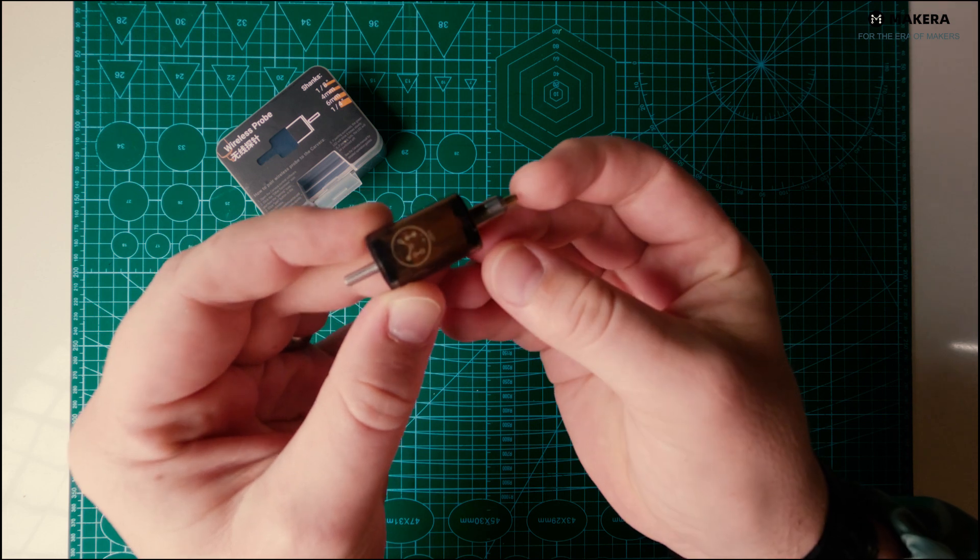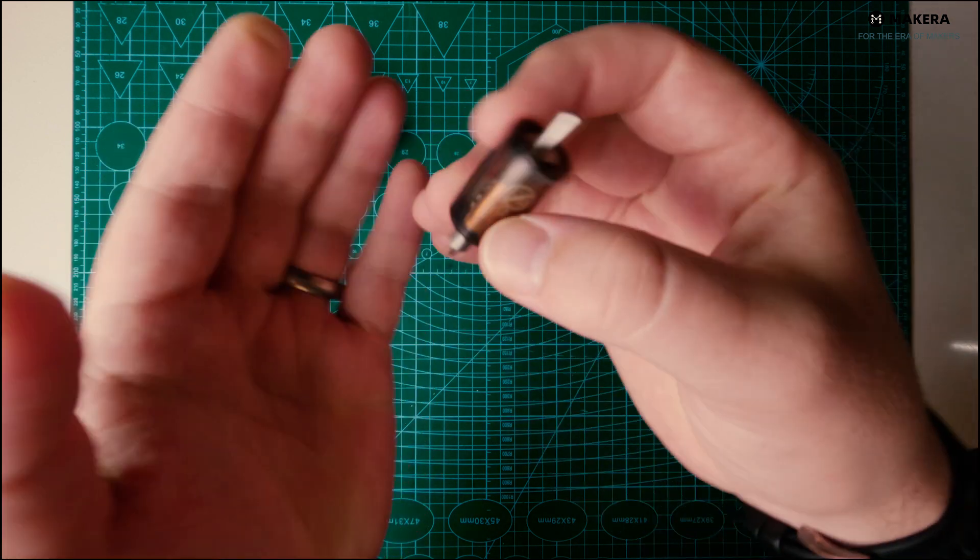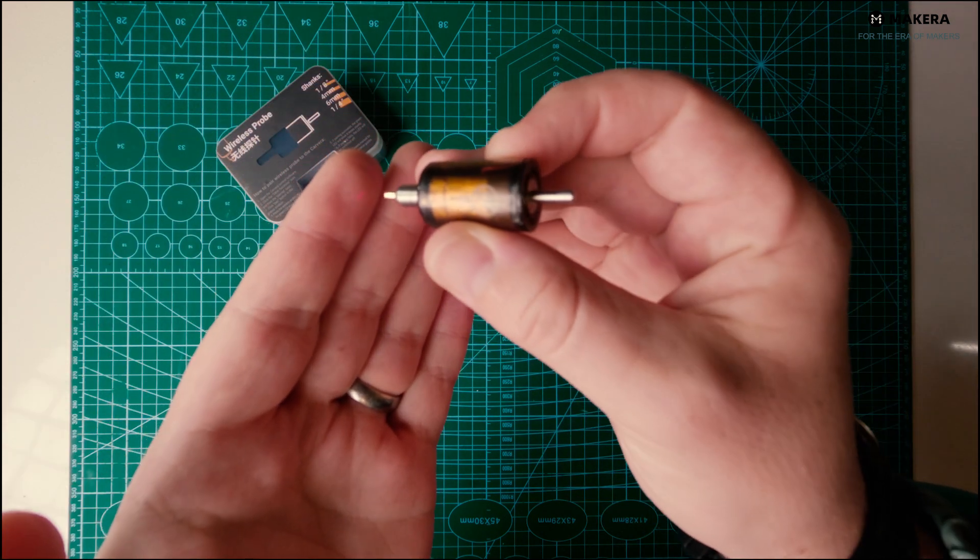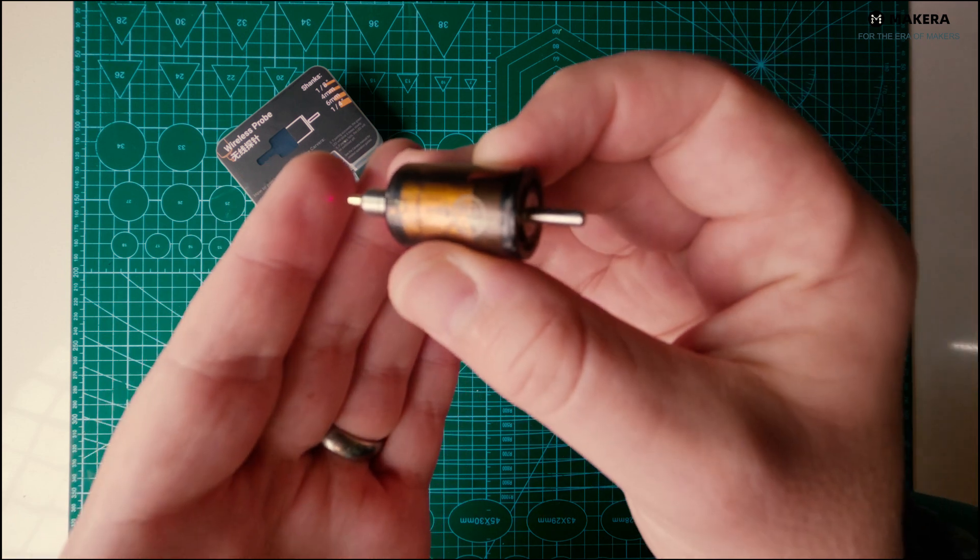A neat feature in this probe is an LED pointer that is used to scan margin before running a job. This gives you a boundary borderline to check any obstructions. This activates by double tapping the pointer.